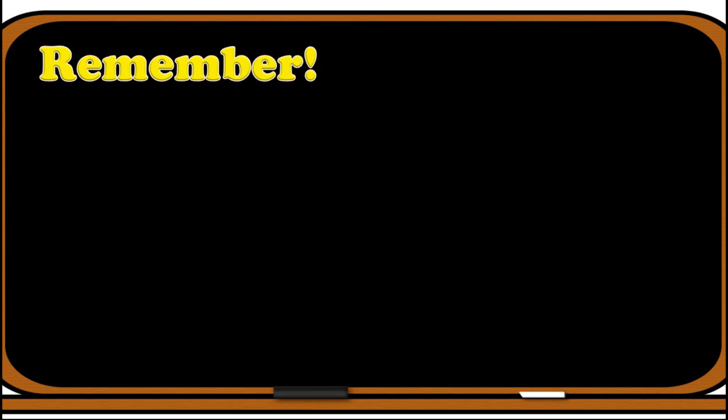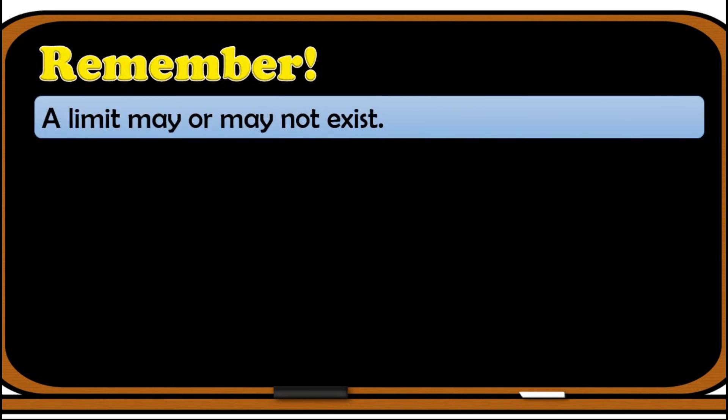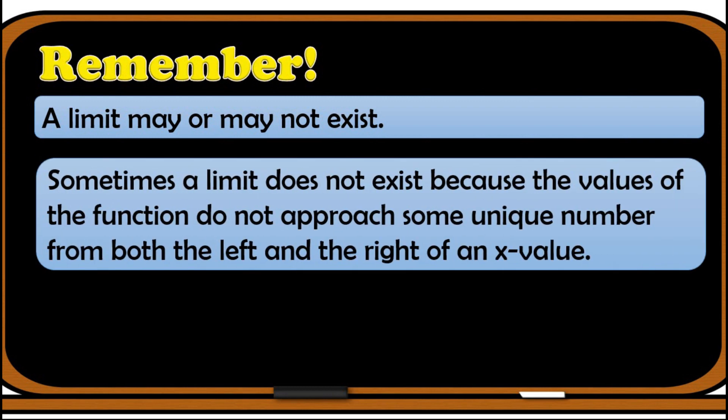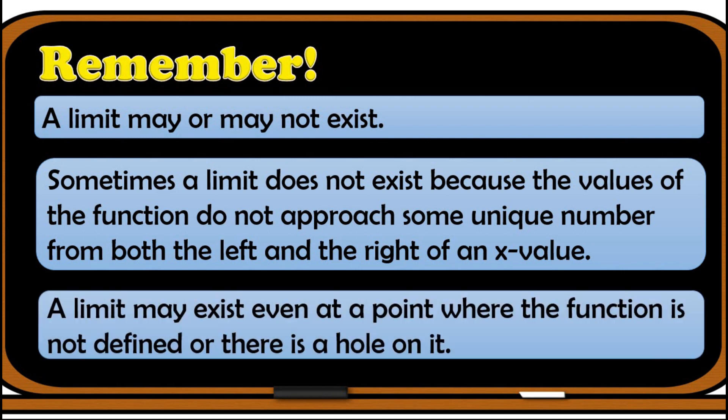What are the important things that you need to take note? First, a limit may or may not exist. Sometimes a limit does not exist because the values of the function do not approach some unique number from both the left and the right of an x value. Third, a limit may exist even at a point where the function is not defined or there is a hole on it, since limits indicate behavior of the function near some x values and not at the x value itself.